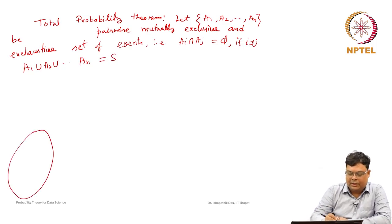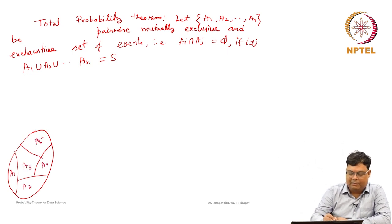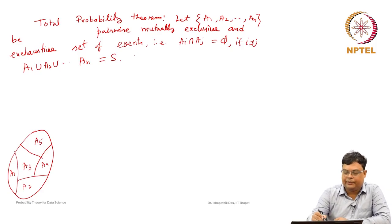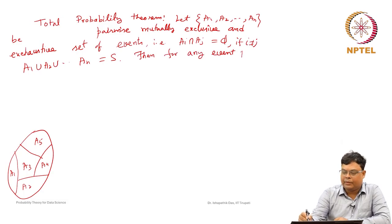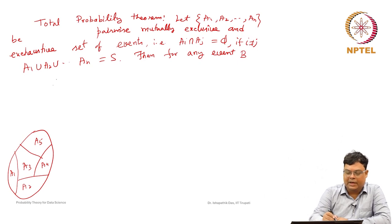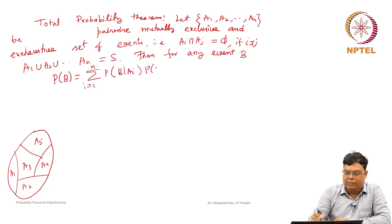So suppose this is the sample space — it is just a partition. This is A1, A2, A3, A4, A5. They are pairwise mutually exclusive — disjoint sets — and their union equals S. Then for any event B, the probability of B can be written as the summation from i=1 to n of P(B|A_i) times P(A_i).